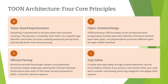The fourth principle is type safety. TOON provides compile-time type safety through schema definitions. Before you can serialize or deserialize TOON data, you define a schema — similar to Protocol Buffers or Thrift. The schema specifies exactly what token types exist, what fields they contain, and what data types those fields use. This means errors are caught at compile time. If you try to access a field that does not exist, your code won't compile, which eliminates entire categories of bugs common in JSON-based systems.